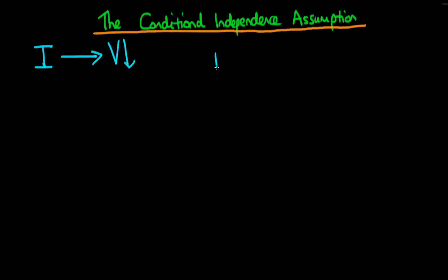We spoke about in the last few videos how if the level of infrastructure spending which a region receives is randomly assigned — so independent of that particular area's characteristics — where DI is equal to 0 for some states and DI is equal to 1 for some other states, and that treatment status in terms of infrastructure spending is randomly assigned,